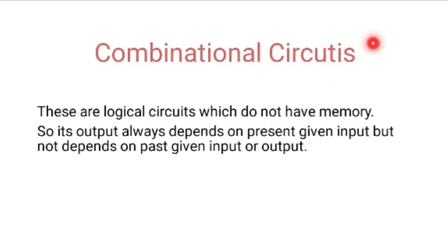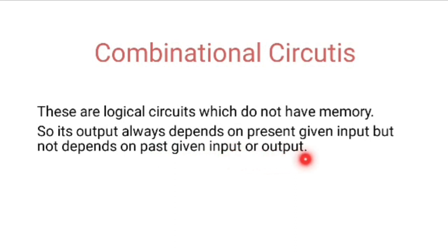Combinational circuits are the circuits which do not have the memory. This is the digital logical circuit which does not have the memory. Means if the circuit does not have the memory, so whatever the input given at present, the output will get according to that present input. The output always depends on the present given input, but not on the past given input or output. So this type of circuit is called as combinational circuits.